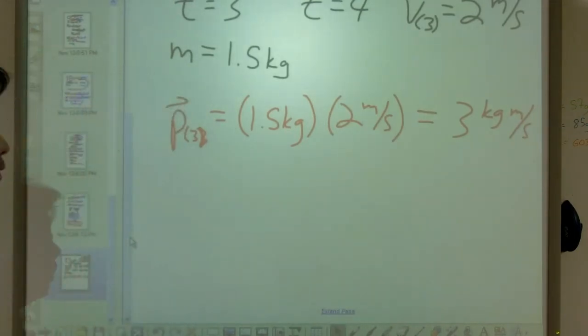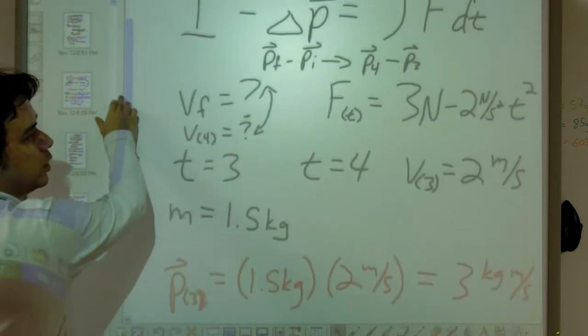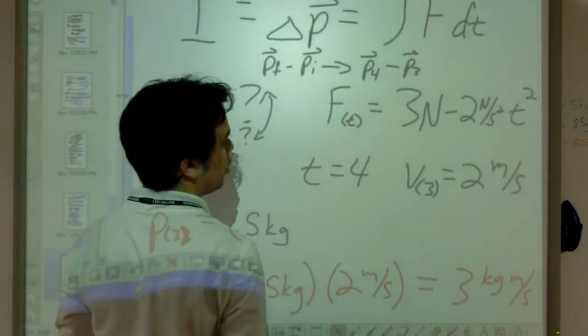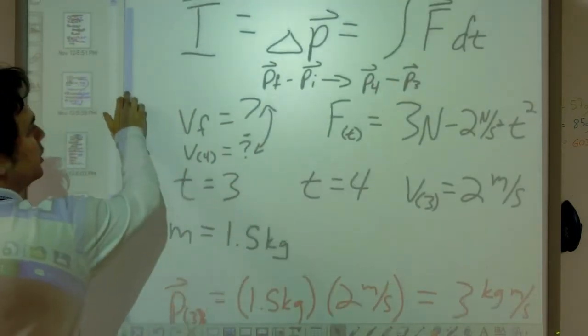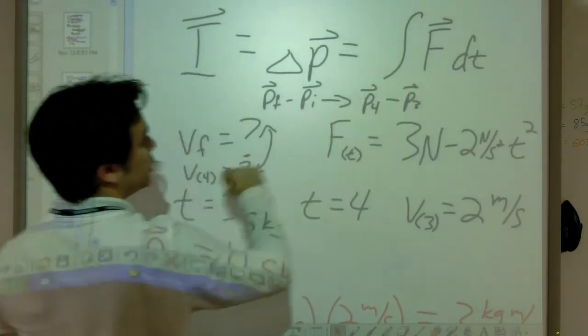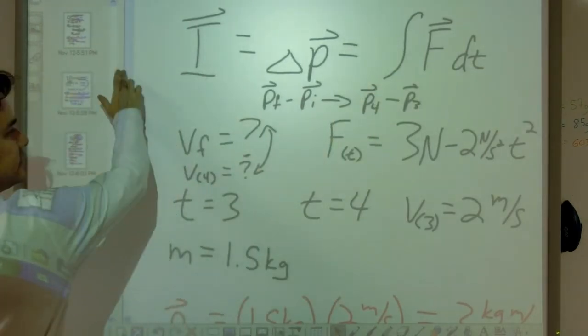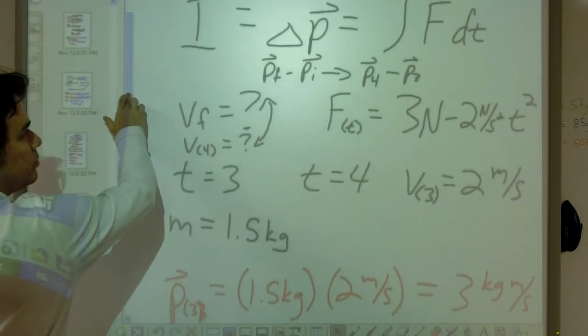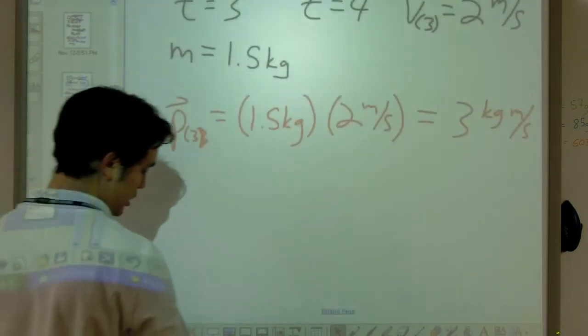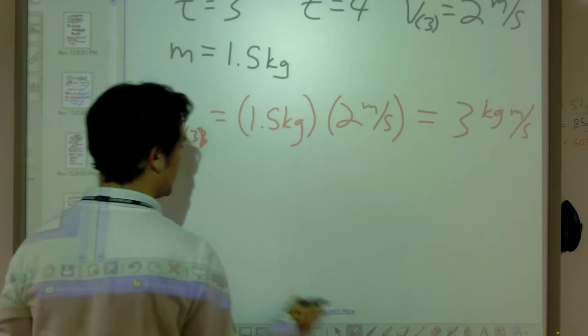Because if we can find our final momentum, then we'll know how fast it's going at the end. Well, all we're given is our force as a function of time. So if we use our impulse relationship, we can do the integral of F dt equals our impulse, which equals our change in momentum.